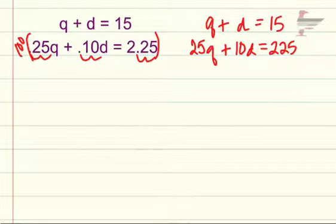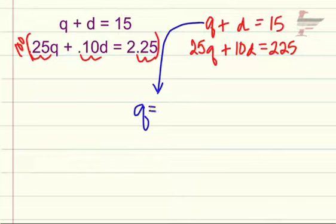The last problem we did elimination, I thought we'd do substitution on this one. You want to solve for a lonely variable. I see Q and D up in the first problem that we could solve for. You could solve for either one. Let's solve for Q. So Q is going to be equal to negative D plus 15.